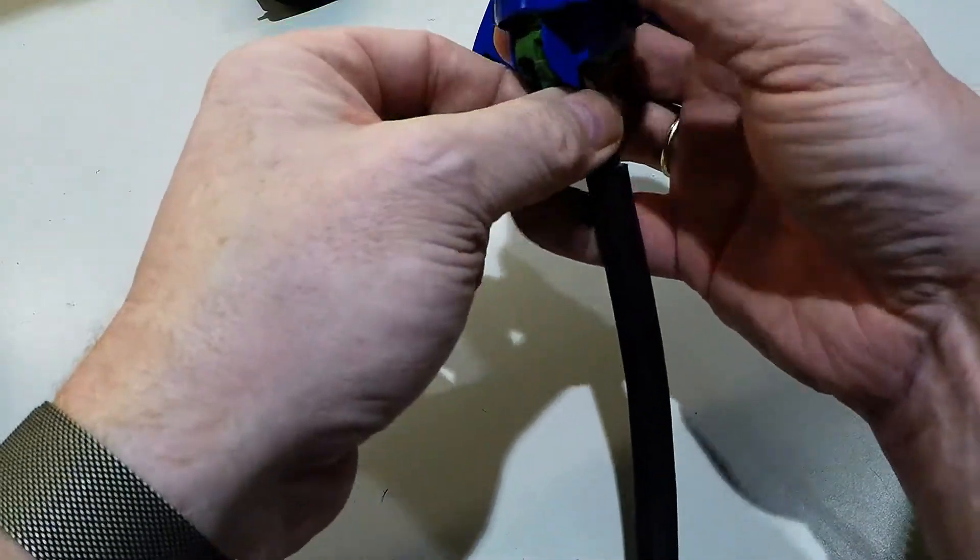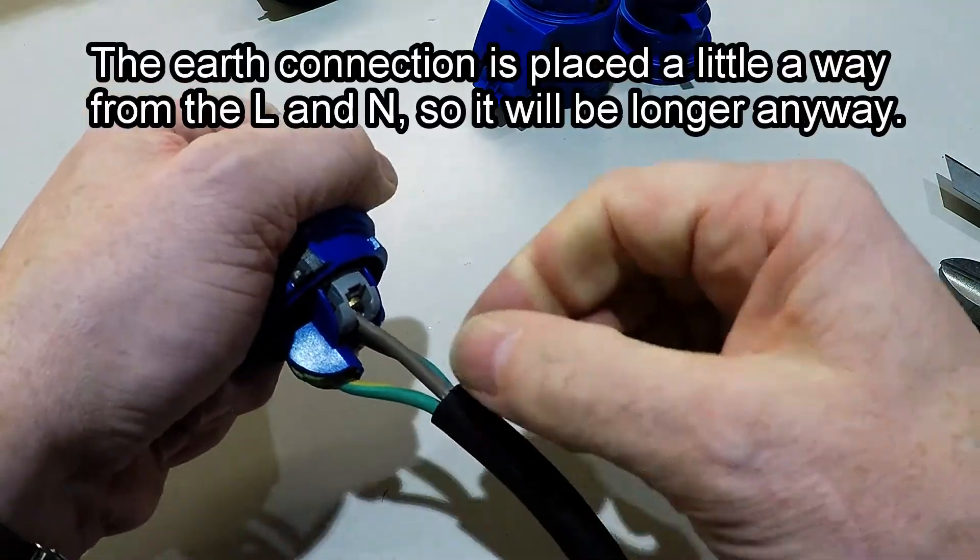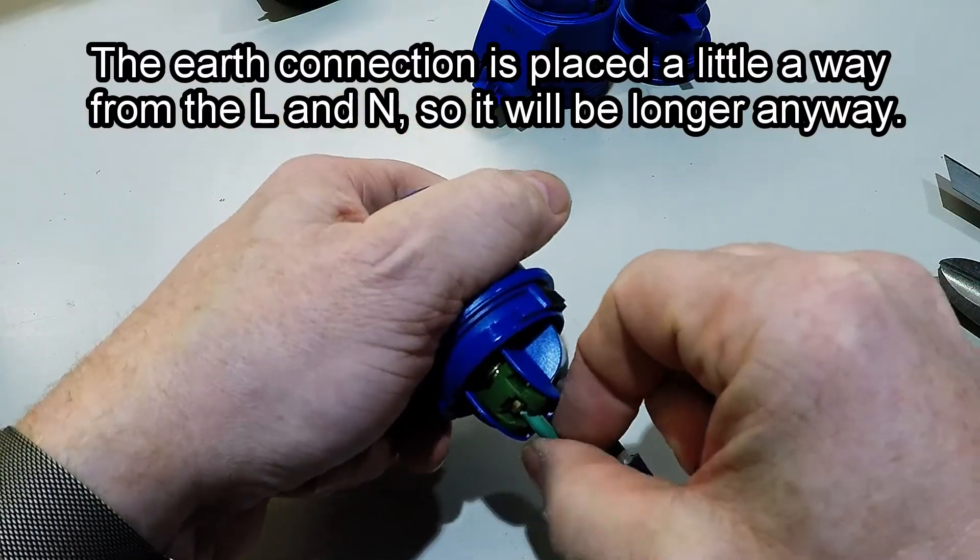Always make sure the green one is a little longer than the rest. Because if you pull it, those two are supposed to be pulled out first. This one should be pulled out last.